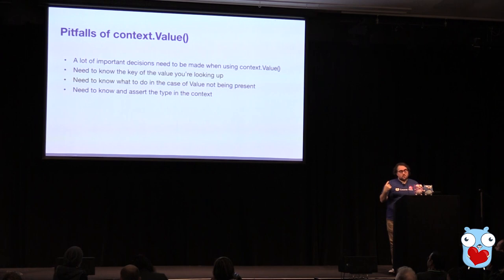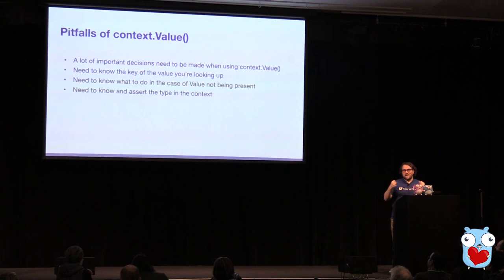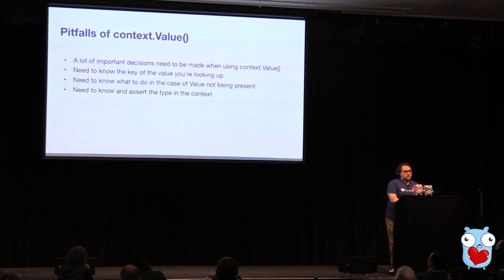And largely one of the reasons for this is that there's a lot of decisions that go along with just raw interacting with the context value. You need to know what the actual key you're looking up is. You need to know what to do in the event that it's not present in the context. You need to know the type and assert that. Every time you're going through that, you need to make sure you're doing all of those steps — so there's a lot of decision making that needs to happen when you're using the direct context value functionality.